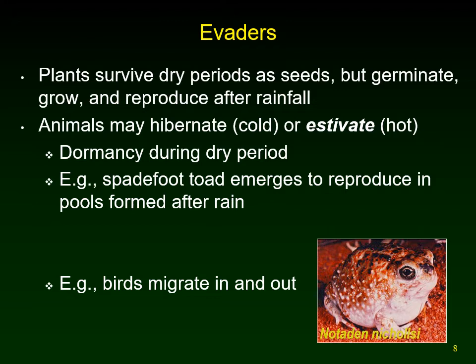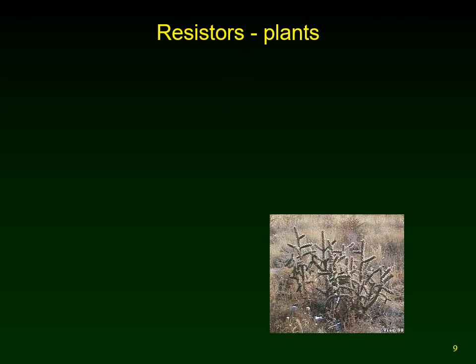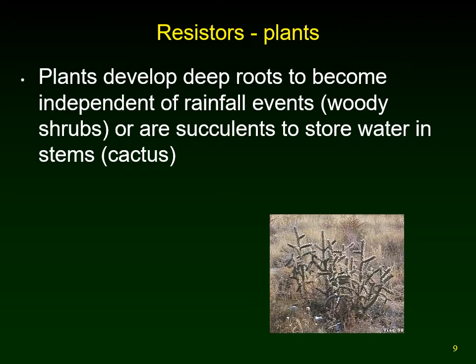Birds will migrate — coming when there are ponds and rainfall and leaving when there's none. Insects emerge with rainfall and then disappear. Perennial plants can't come and go, so they tend to grow very deep roots to tap into groundwater, producing woody shrubs that reach deep into the soil. Many succulents, like cacti with thick stems, will swell up their stems to store water when rain does arrive.